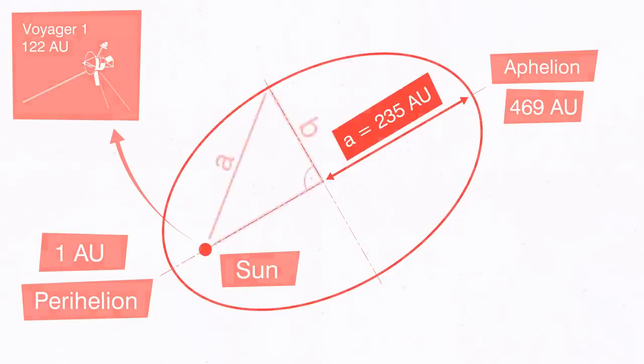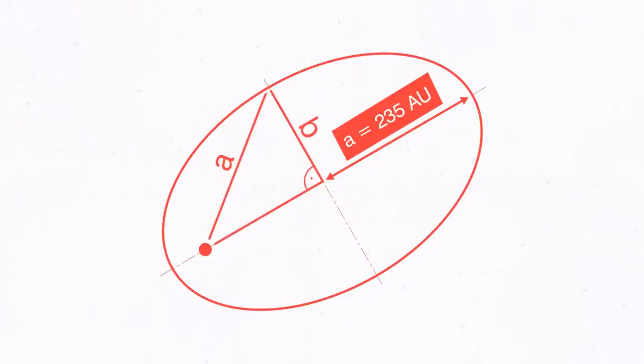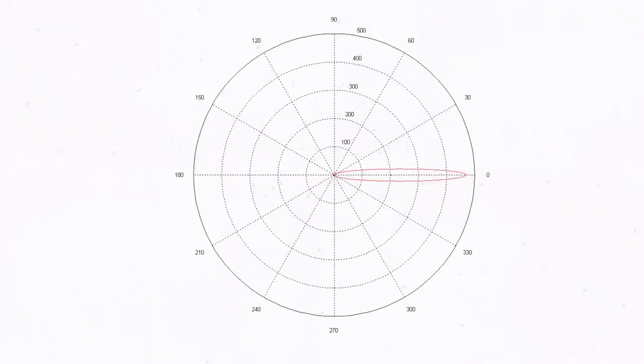The semi-minor axis forms a right-angled triangle with the distance from focus to center as the other leg and the length of the semi-major axis as hypotenuse. Plotted to scale, the orbit appears as a very squashed ellipse with extreme eccentricity.